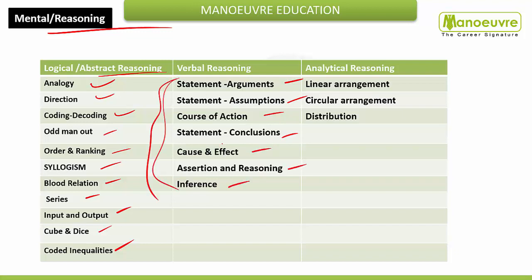So those are all your verbal reasoning topics. If we talk about analytical reasoning, linear arrangement is most and most important, circular arrangement is also quite important, and distribution — this section will have the highest weightage in your exams.